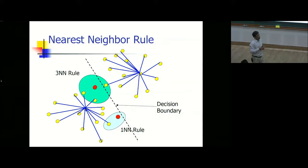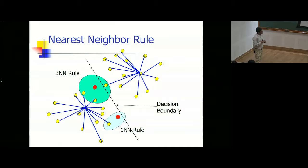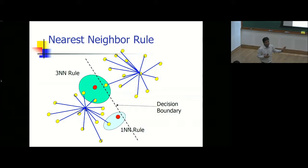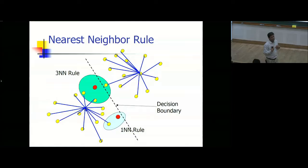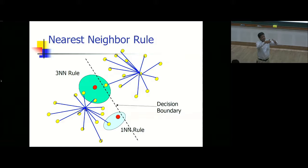For 1-NN, you look at the single nearest neighbor. For 3-NN, you look at the first, second, and third nearest. For K-NN in general, you look at the K most nearest ones, then assign to the corresponding class. This is the easiest supervised algorithm in data science. Beyond K-NN, you can try neural networks, genetic algorithms, support vector machines, decision trees, and deep learning.